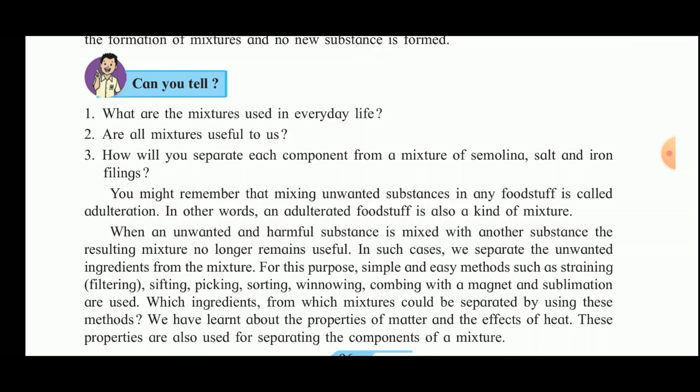You might remember that mixing unwanted substances in any foodstuff is called adulteration. In other words, an adulterated food is also a kind of mixture. For example, in rava, if iron filings are added, that is unwanted. So that mixture is not useful to us. When an unwanted and harmful substance is mixed with another substance, the resulting mixture no longer remains useful. In such cases, we separate the unwanted ingredients from the mixture.